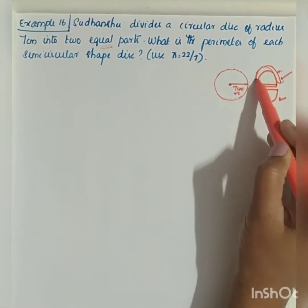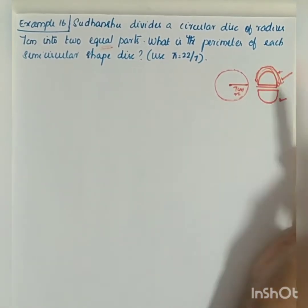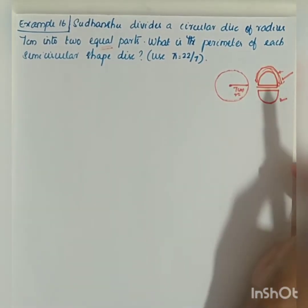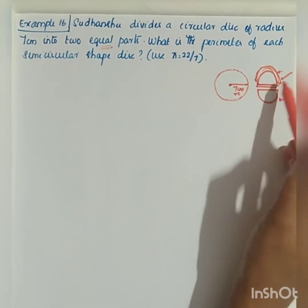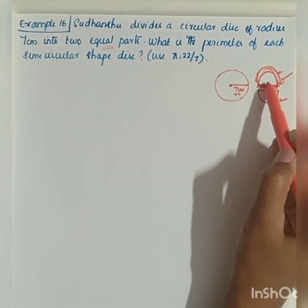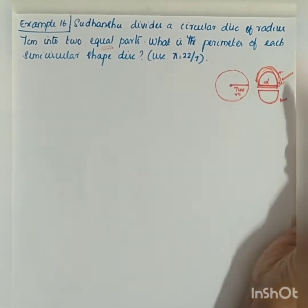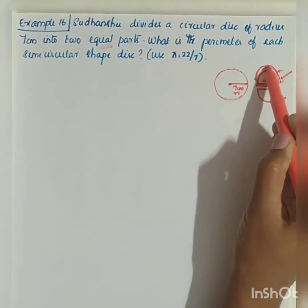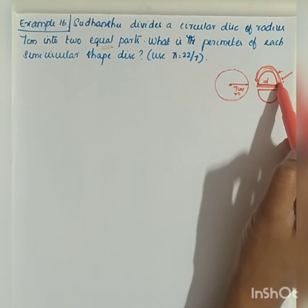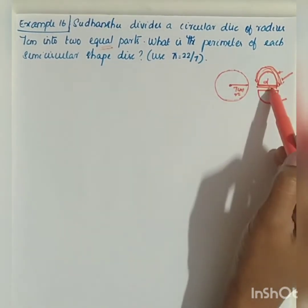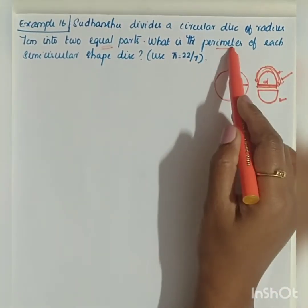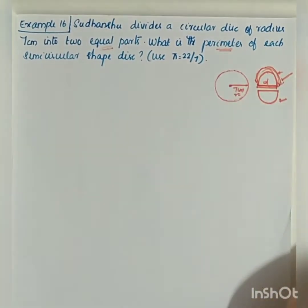This is the perimeter. To find out the perimeter, I should know the diameter — this is the diameter — and the circumference of the semicircle. If I know these two values, then I can get the perimeter of the semicircular shape.